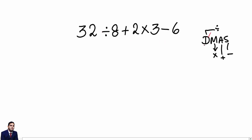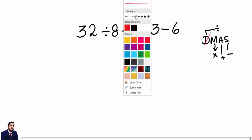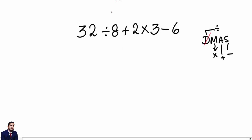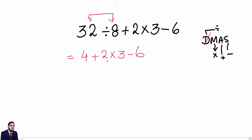First of all, we will solve the division. 32 divided by 8 — 8 fours are 32 — equals 4. So we get 4 plus 2 multiply 3 negative 6.